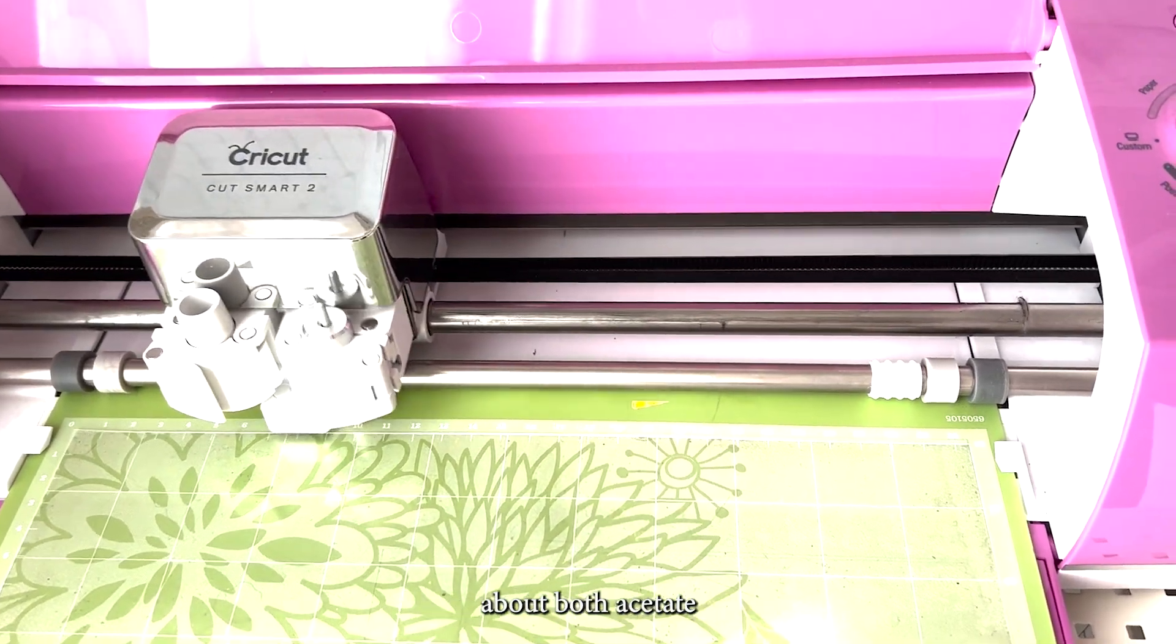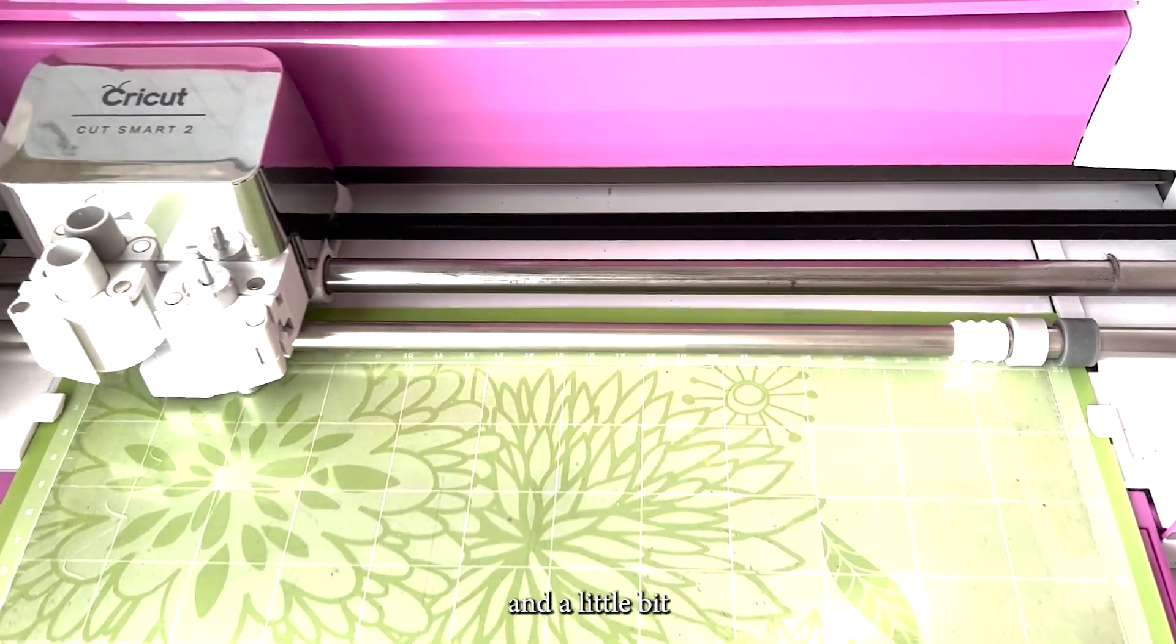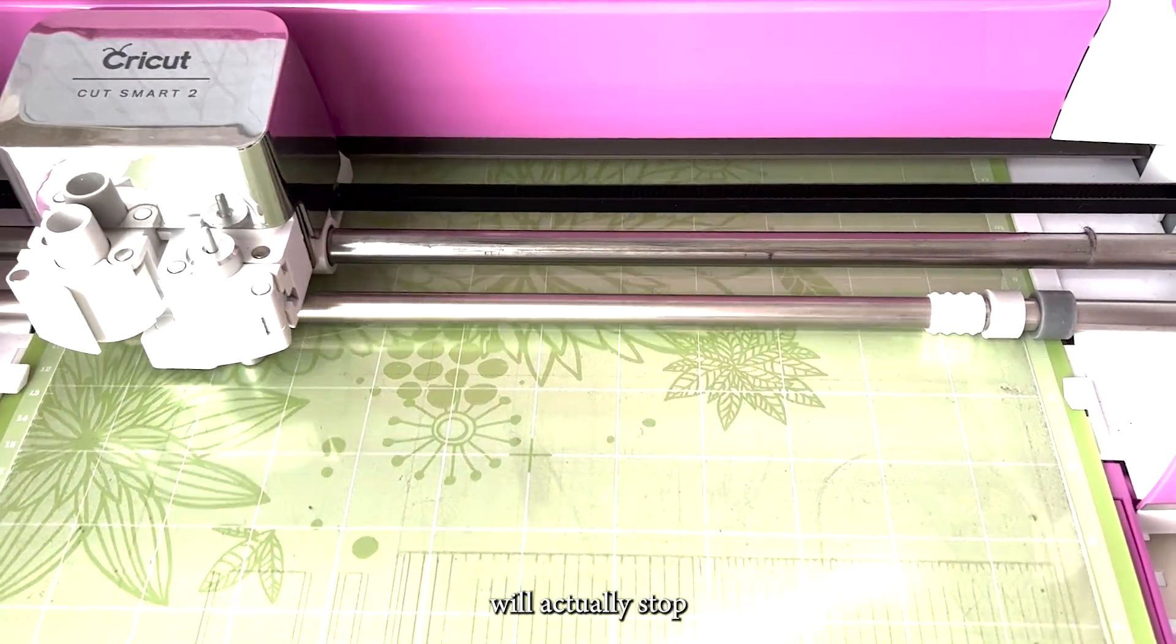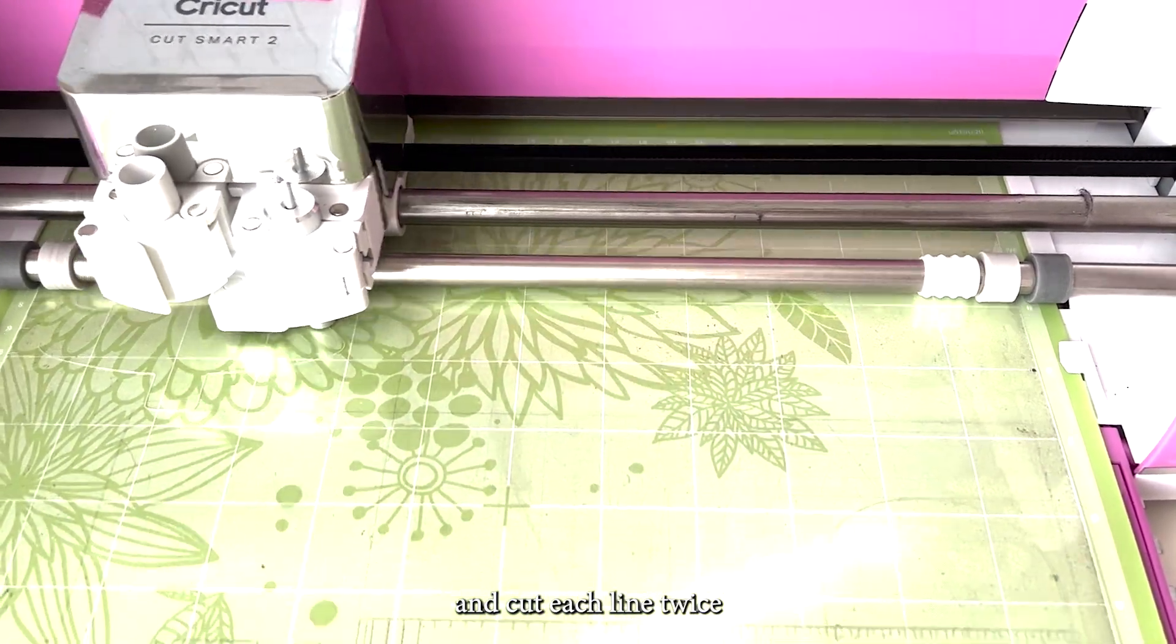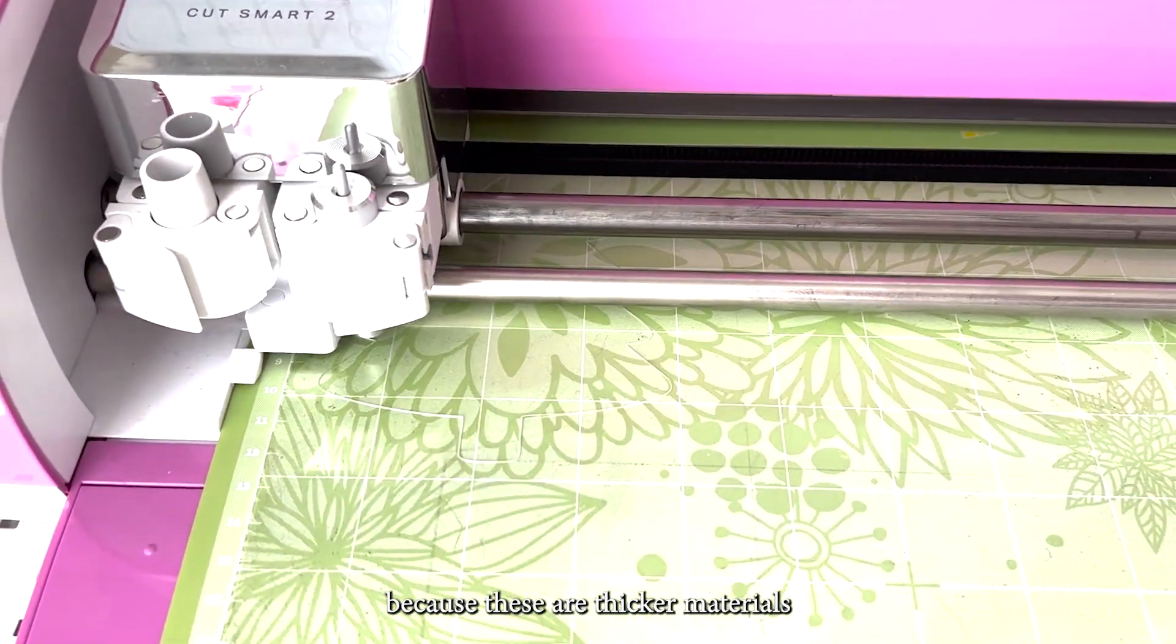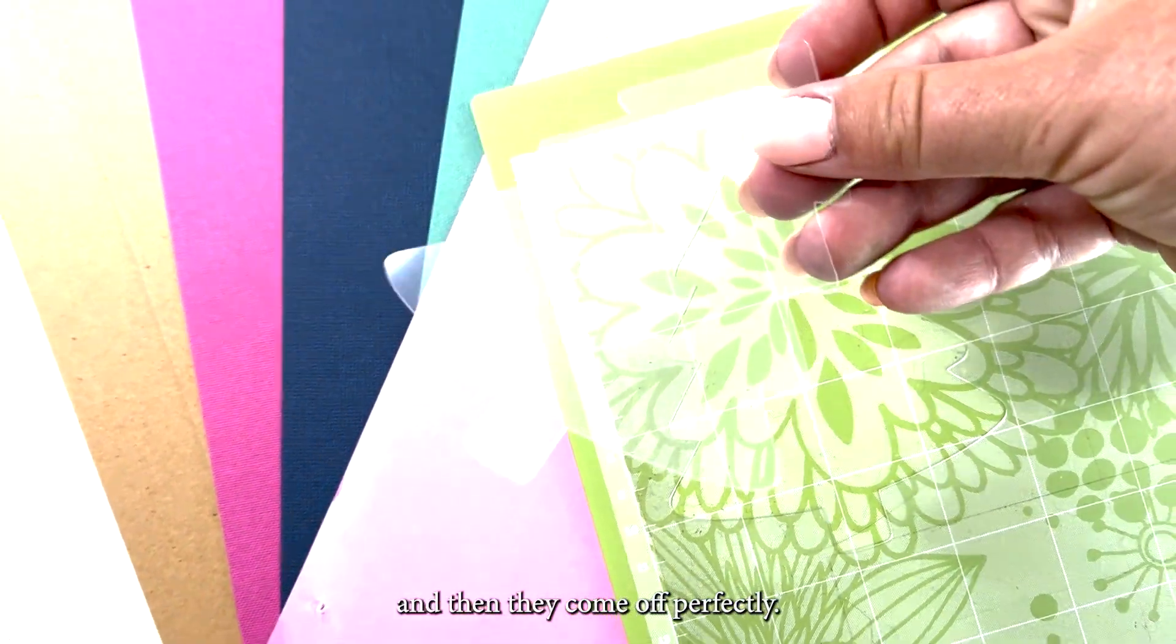The one thing that you'll notice about both acetate as well as the craft board here in a little bit is that the Cricut machine will actually stop and cut each line twice because these are thicker materials and we're using the Cricut Explore Air 2. They cut twice and then they come off perfectly. So let's head back over into design space and select our next material.